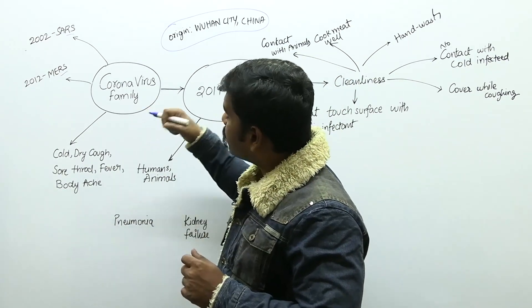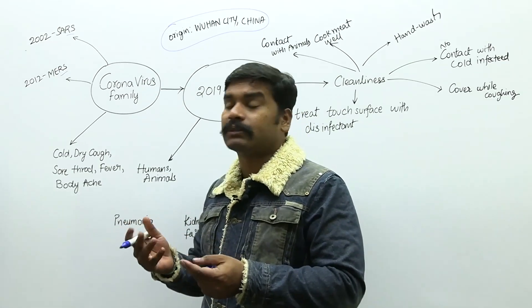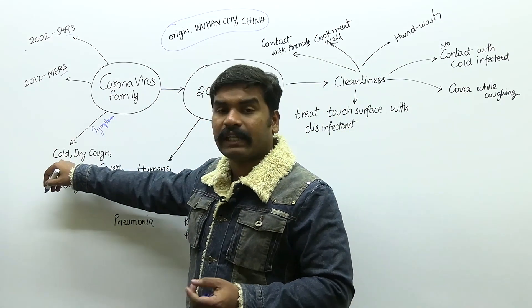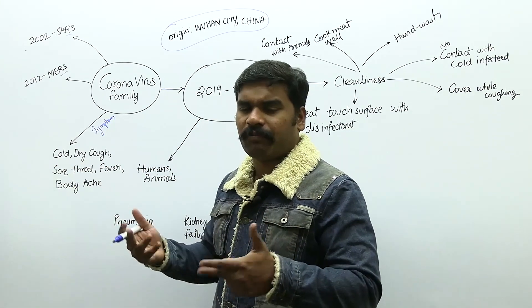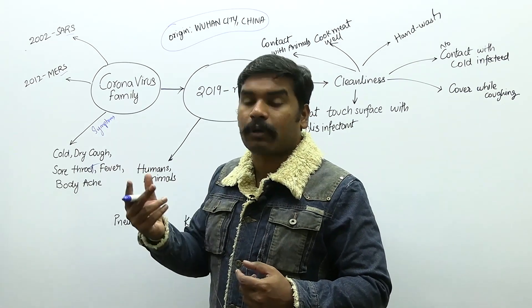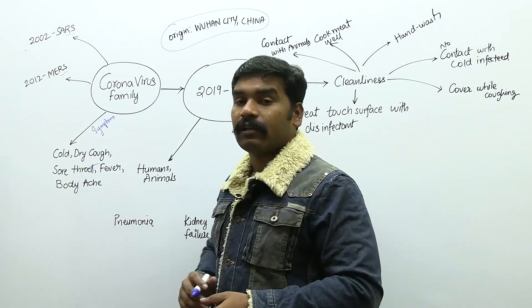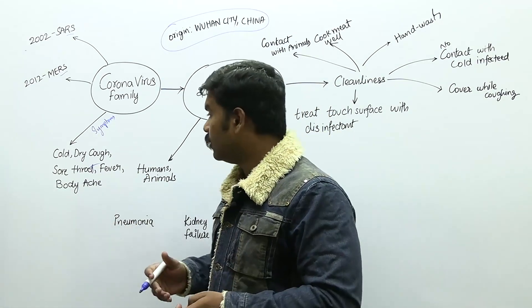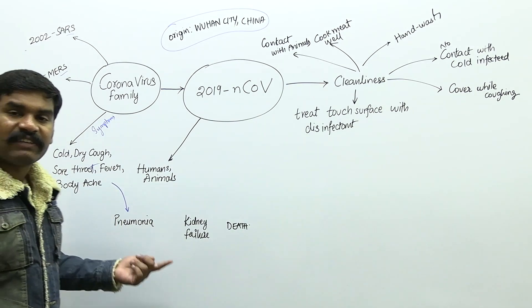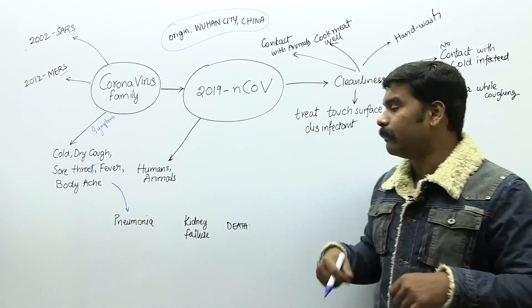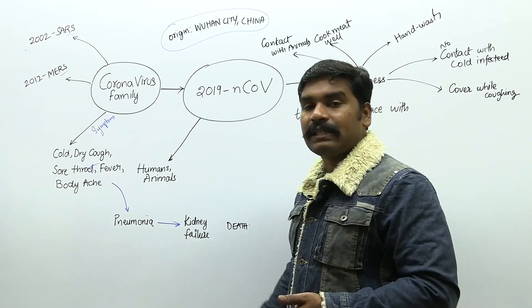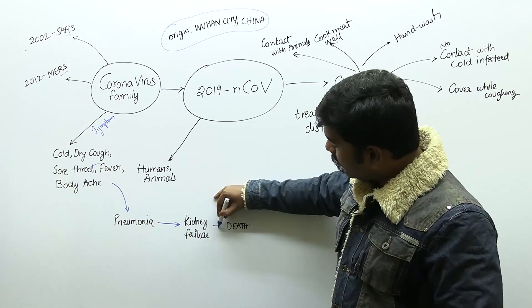This coronavirus basically attacks the respiratory system. The symptoms you will get include cold, dry cough — frequently coughing — sore throat where you get pain while talking, fever, and body aches. As the virus keeps progressing beyond these symptoms, it leads to severe pneumonia — a very severe breathing problem where it is difficult even to take a breath. As it progresses further, it leads to kidney failure, which ultimately leads to death.